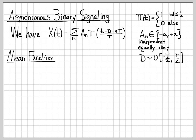So first, let's compute the mean function for this random process. By definition, we want to compute the expected value of X(t). That is equal to the expected value of this whole thing right here.